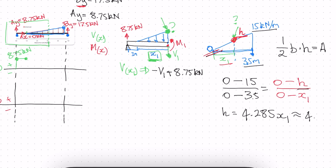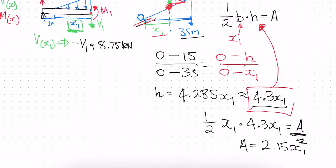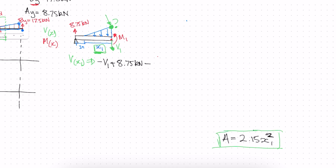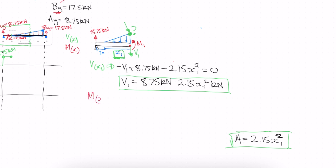Rounding h to 4.3·x1, the area of the triangular load (which gives the total force) is ½ × x1 × 4.3·x1 = 2.15·x1². This force acts downward, so it enters the shear equation as negative 2.15·x1². Setting the sum to zero gives: V1 = 8.75 − 2.15·x1² kilonewtons. That is our shear function V1.